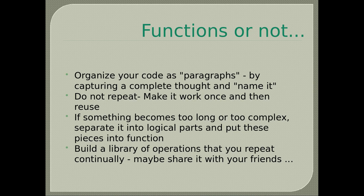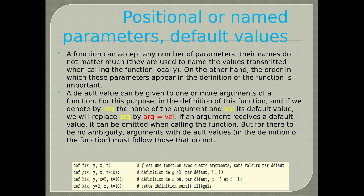A function can accept any number of parameters. Their names do not matter much — they are used locally to name the values transmitted when calling the function. However, the order in which parameters appear in the function definition is important. A default value can be given to one or more arguments of a function: in the definition, replace arg with arg=val. If an argument has a default value, it can be omitted when calling the function. Arguments with default values must follow those that do not.